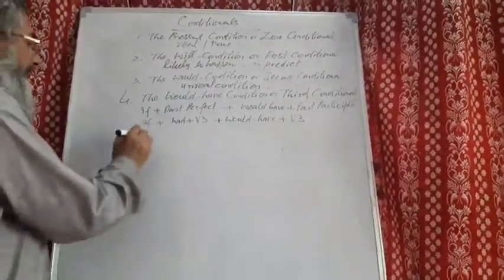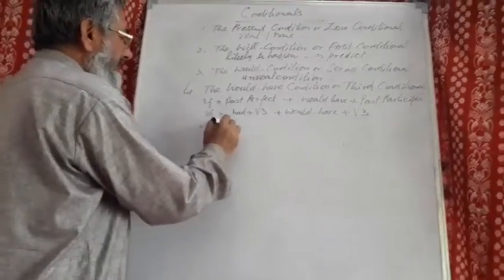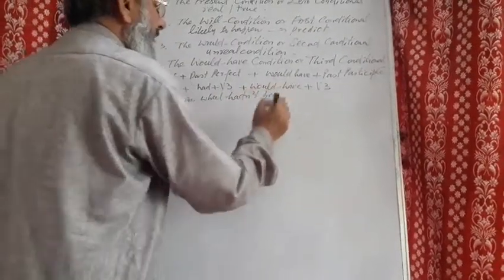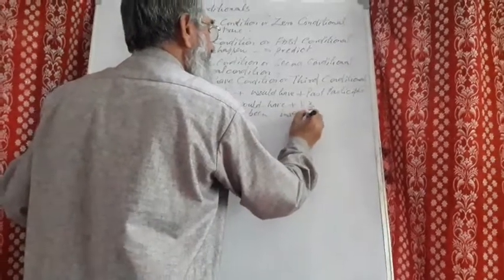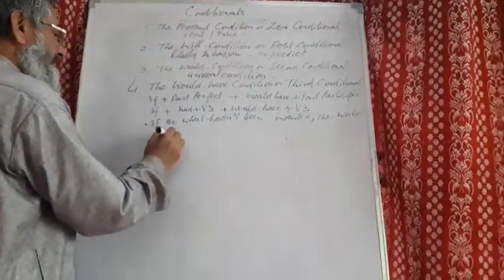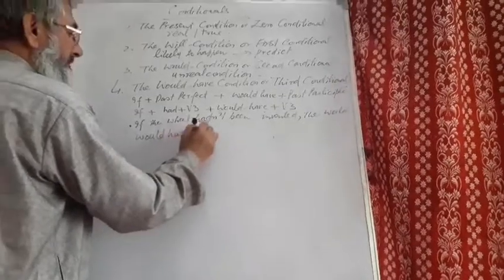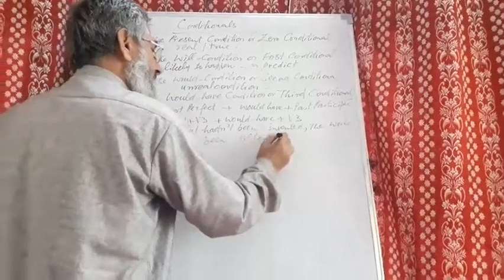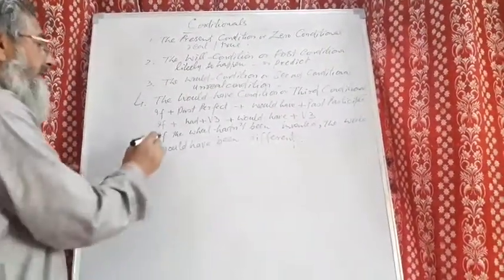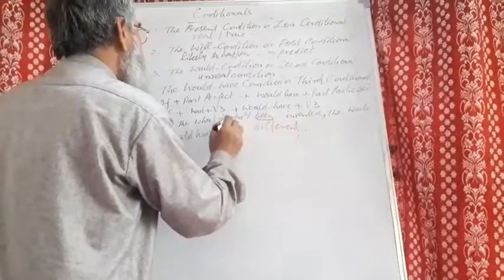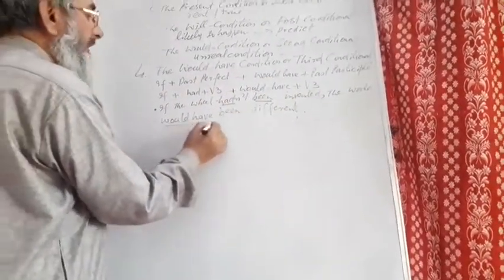Example: if the wheel hadn't been invented, the world would have been different. Looking at the if-clause, we have had and been, so it is past perfect. And in the main clause, would have been — would have plus past participle.